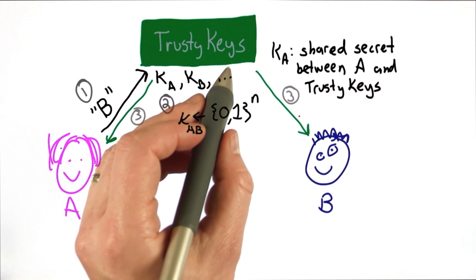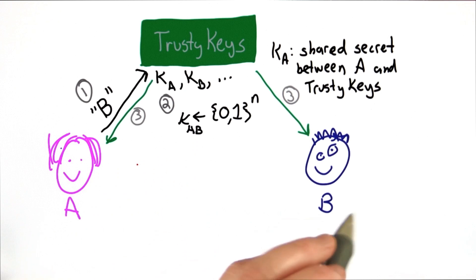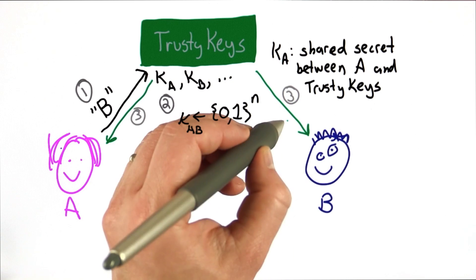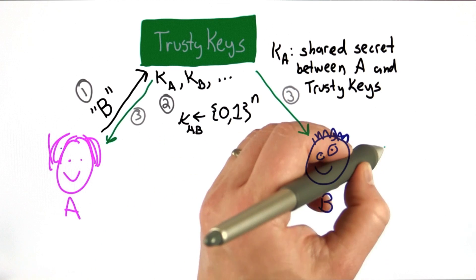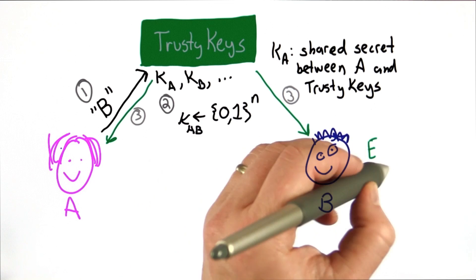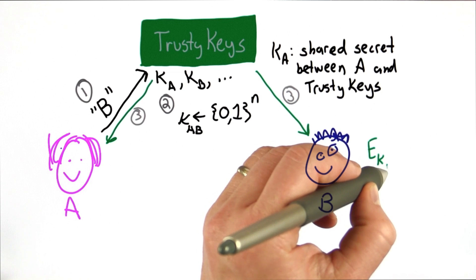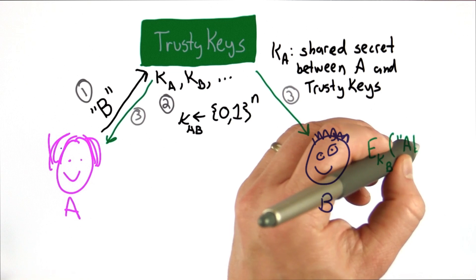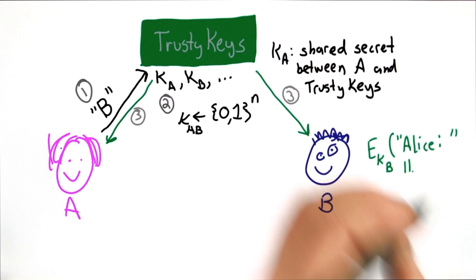So in step 3, TrustyKeys will send the new key to both Alice and Bob, and it will send it encrypted using the key that's already shared between those two parties. So what it sends to Bob is the encryption using KB, the shared key between Bob and TrustyKeys, of something that says Alice's name concatenated with the actual key.